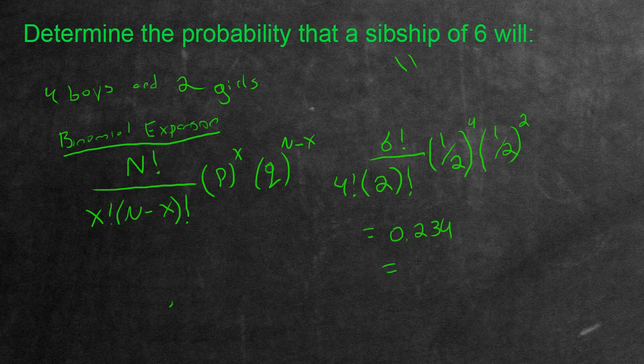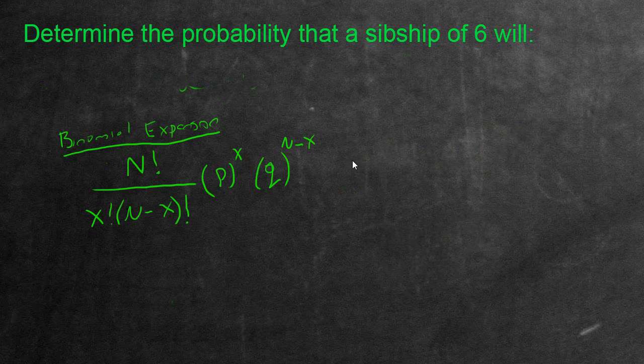So if you input this into your calculator, which is actually kind of difficult, if you actually did the calculation again, you would get 0.234 as the probability. Also, this is equivalent to 23.4%. That is the chance that out of six siblings, four of them are going to be boys and two of them would be girls.